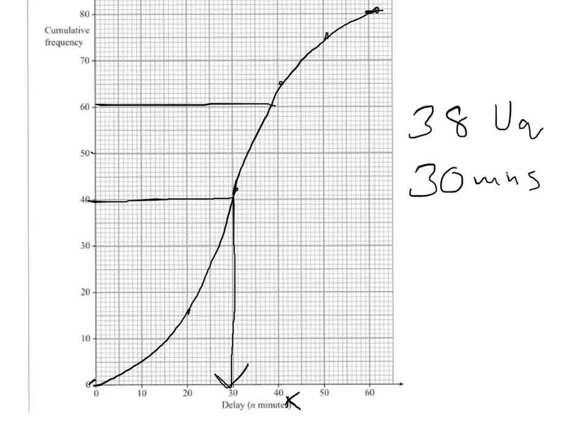And then if we come down to 20, and we come across, we're looking at about 23 for the lower quartile.